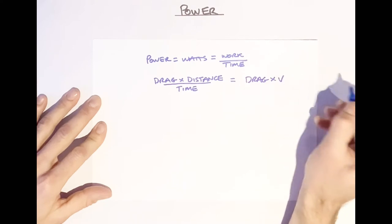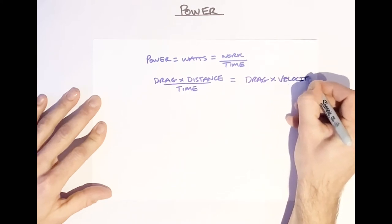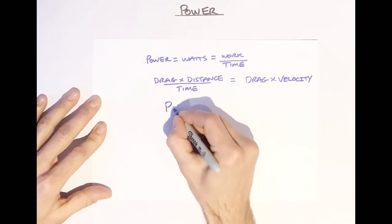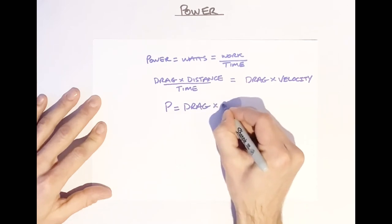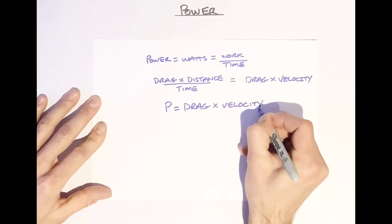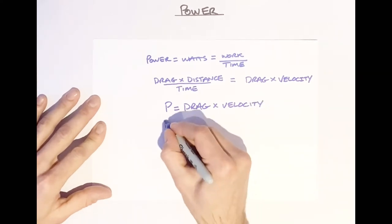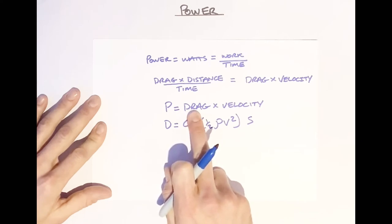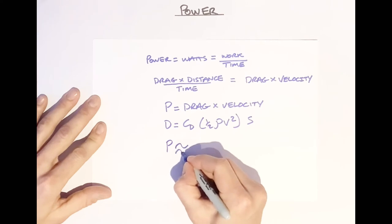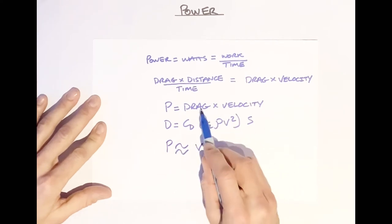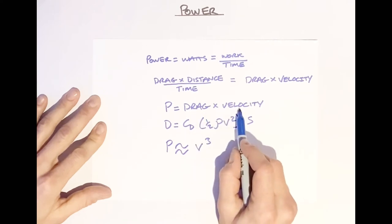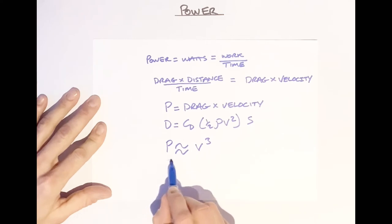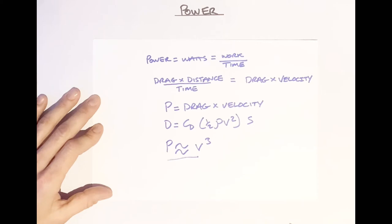So power is equal to drag times velocity. If you remember the equation for drag, it contains velocity squared. So you can see that power is proportional to velocity cubed — we've got v² inside the drag equation, times velocity again gives v³. So every time you increase speed, the power required is going to increase as a cube — quite a lot of power required.